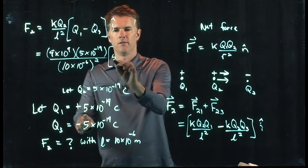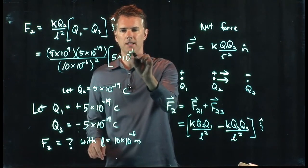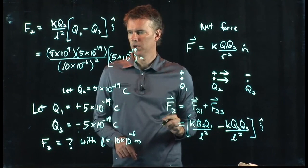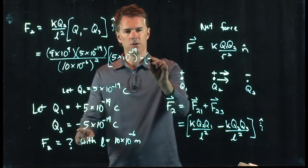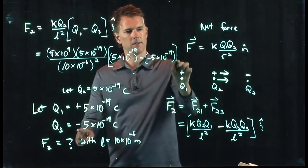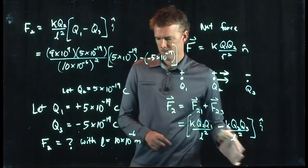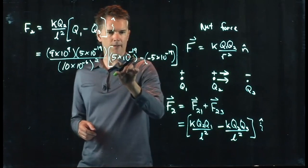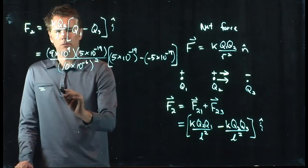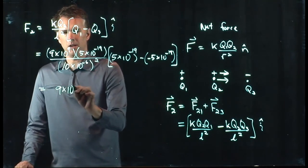And then we have this quantity, which is q1, 5 times 10 to the minus 19, minus q3, which is negative 5 times 10 to the minus 19. So we have 5 minus a negative 5, and so that thing just doubles.